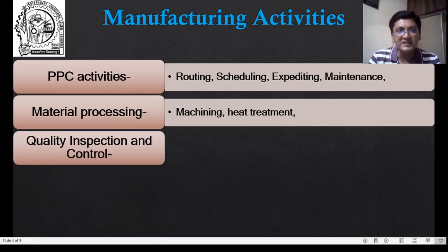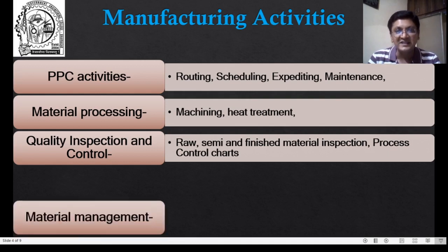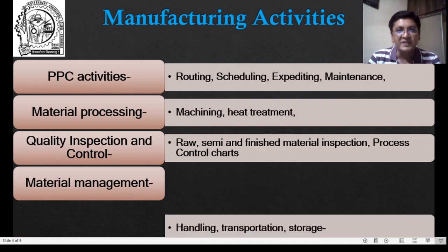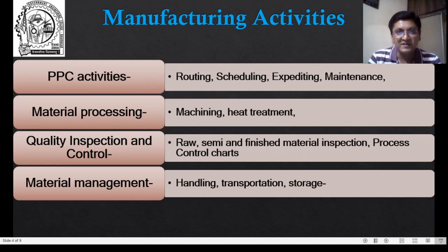The third category of activities is Quality Inspection and Control. Inspection of raw, semi-finished, and finished materials, and preparation of process control charts belong to this category. The fourth category is Material Management, which involves Handling, Transportation, and Storage of material. These are the four major categories of manufacturing activities generally performed in manufacturing organizations.